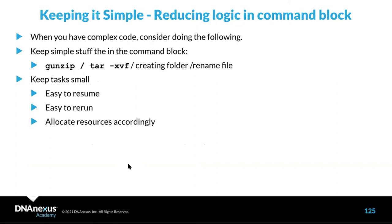To keep things simple, reduce logic within the command block for tasks. Think about the granularity of your task and keeping its scope small. This makes it easier to test, rerun, and reuse, and also easier to allocate the correct resources. You can have simple stuff in the command block, but reduce conditionals where possible by making tasks more granular.